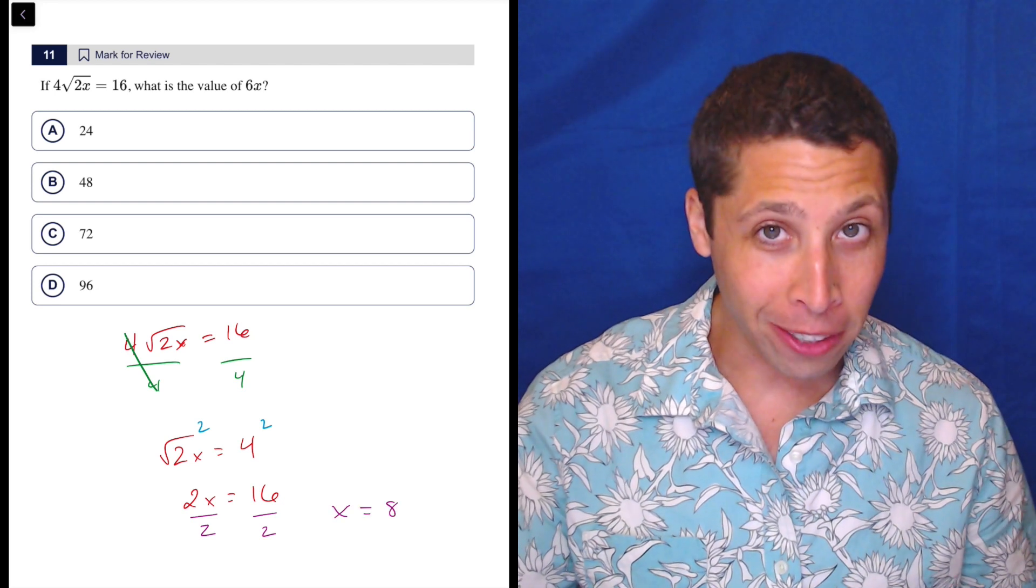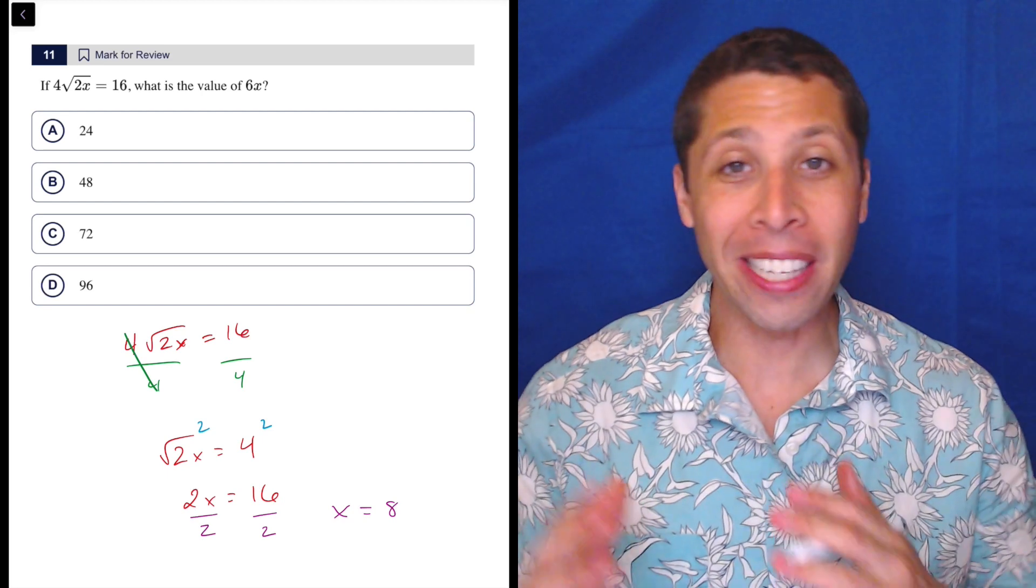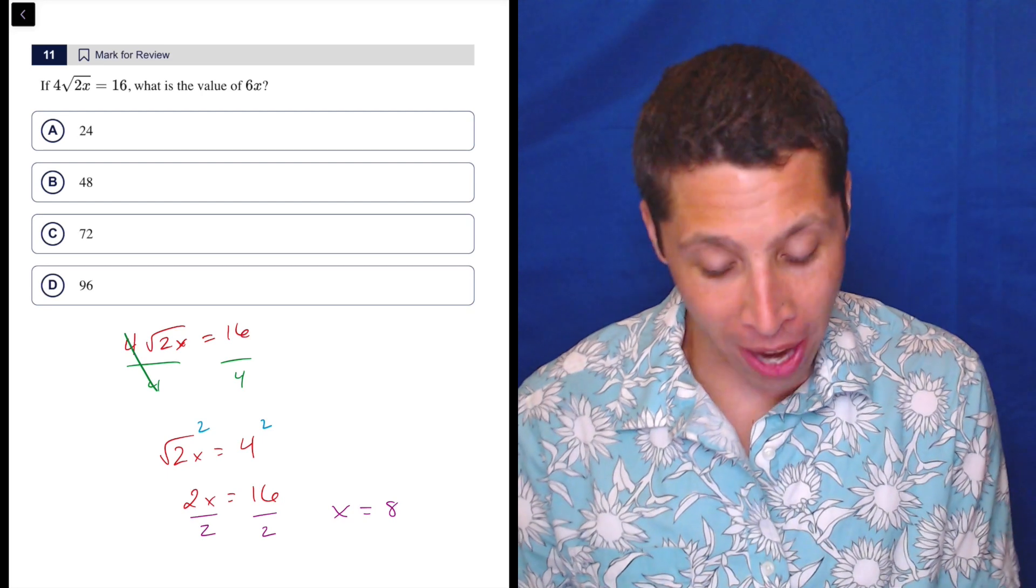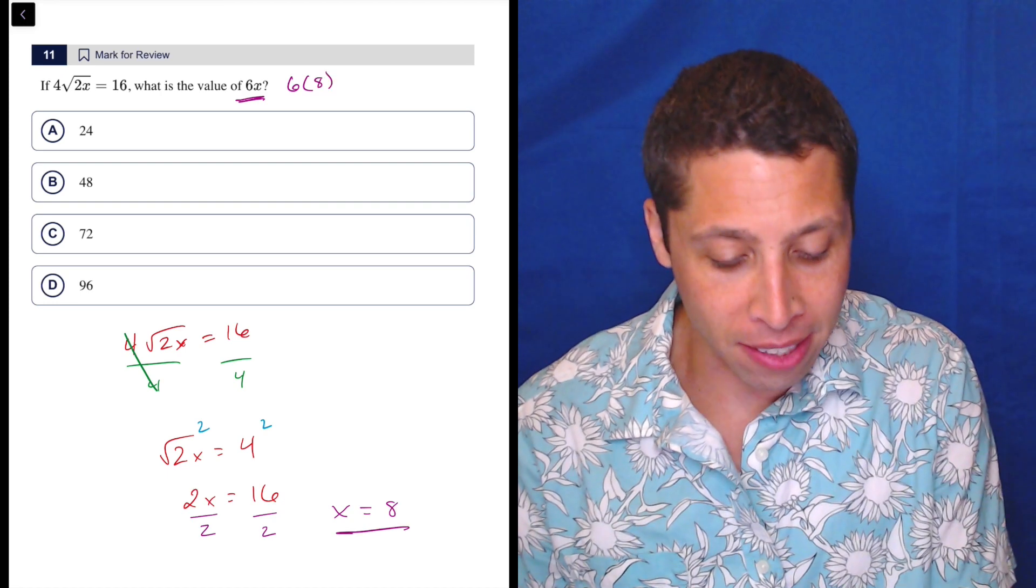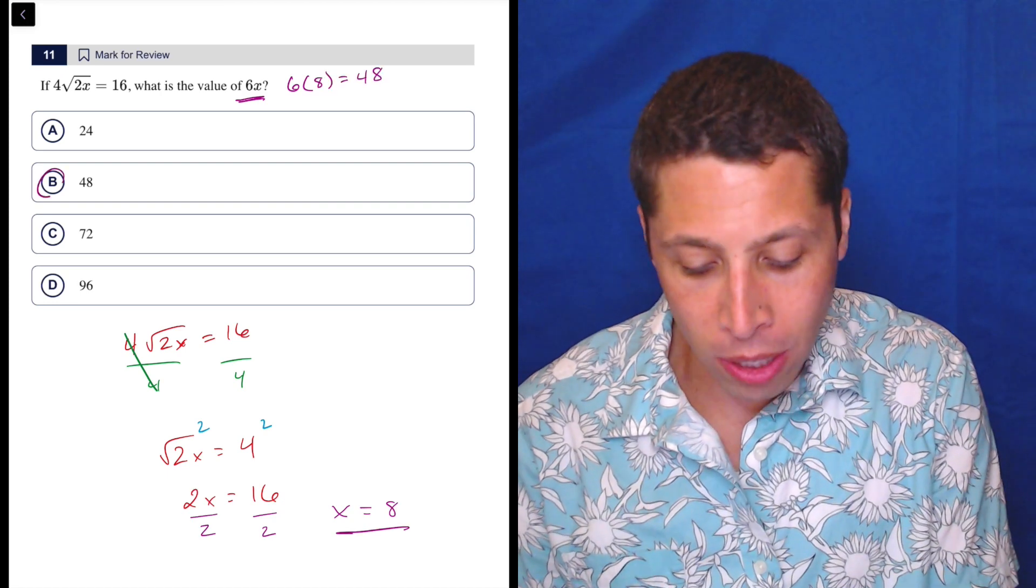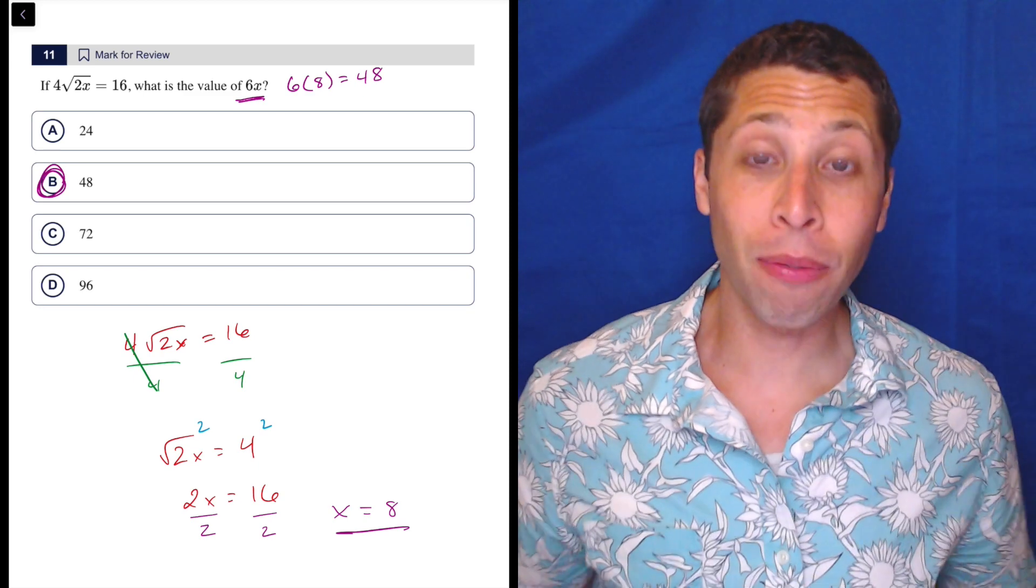Now that is not an answer, which I'm surprised by, but the reason it's not an answer is that's not what they want. They want the value of 6x, so we just need to multiply our x by 6, and so that's just 48. No need for a calculator there. So that is the final answer.